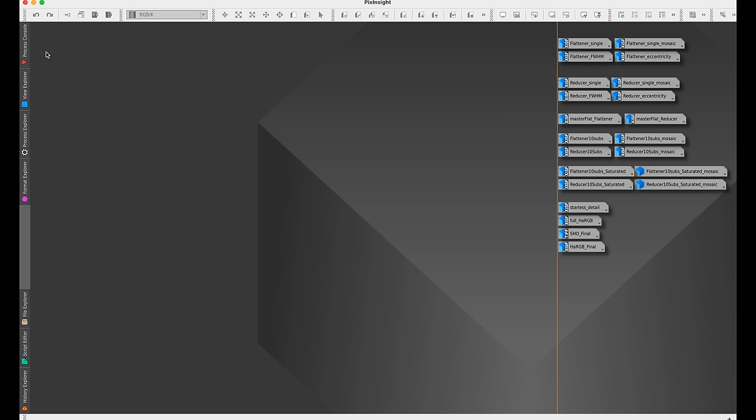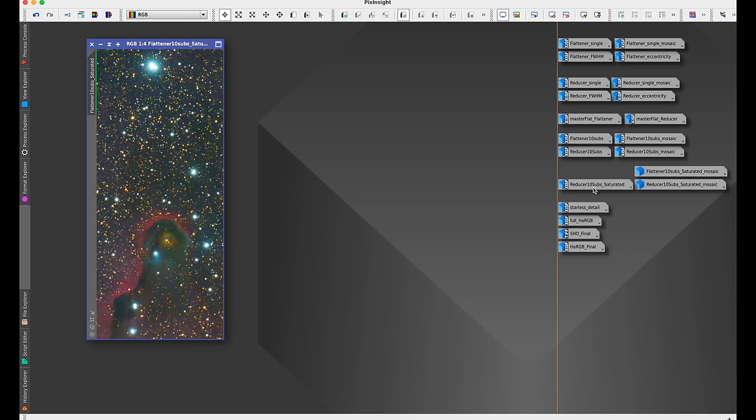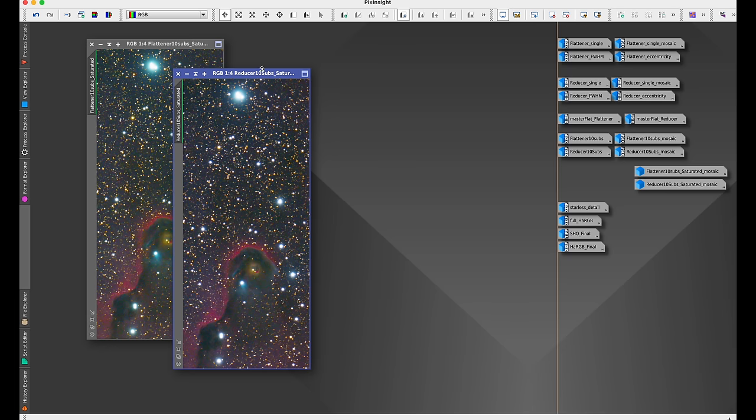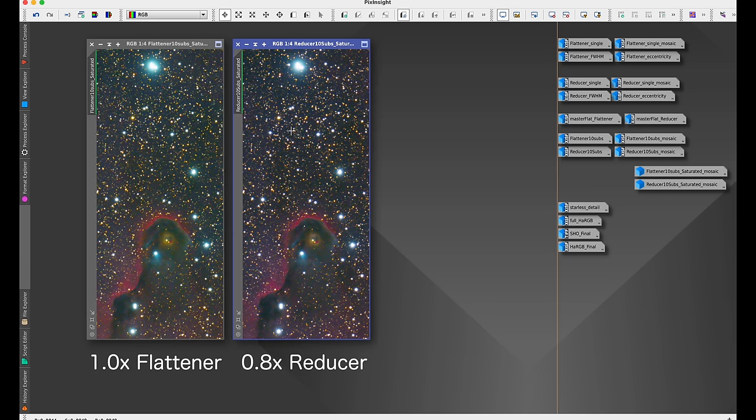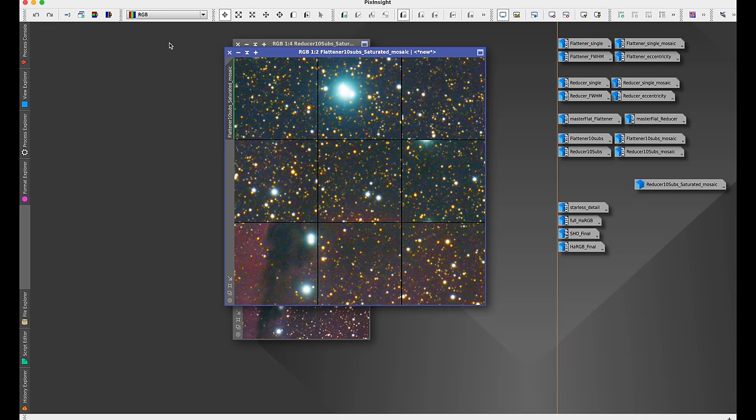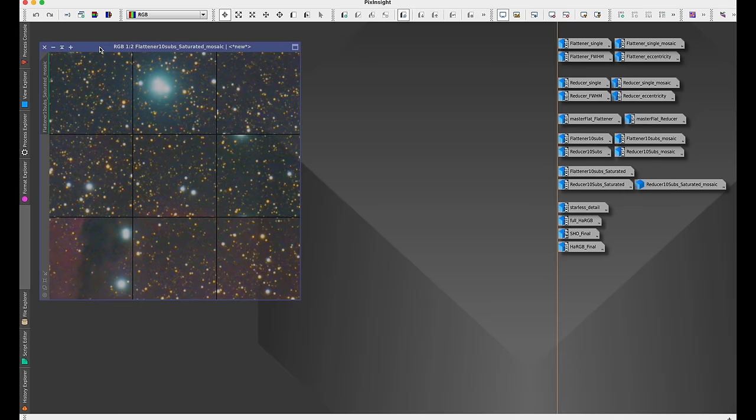Now the other big thing that we look at when we are examining stars with telescopes is chromatic aberration. I just took my 10 sub stack and I really saturated it both for the flattener and for the reducer. In both cases I think that at this 100% zoom view I really don't see any problems.